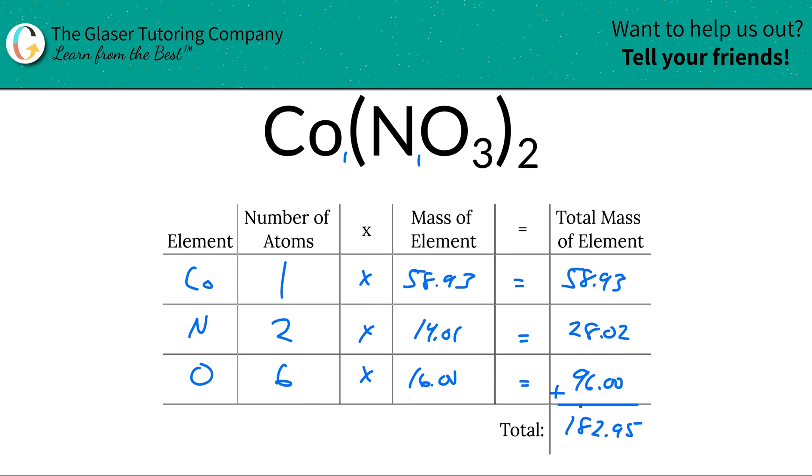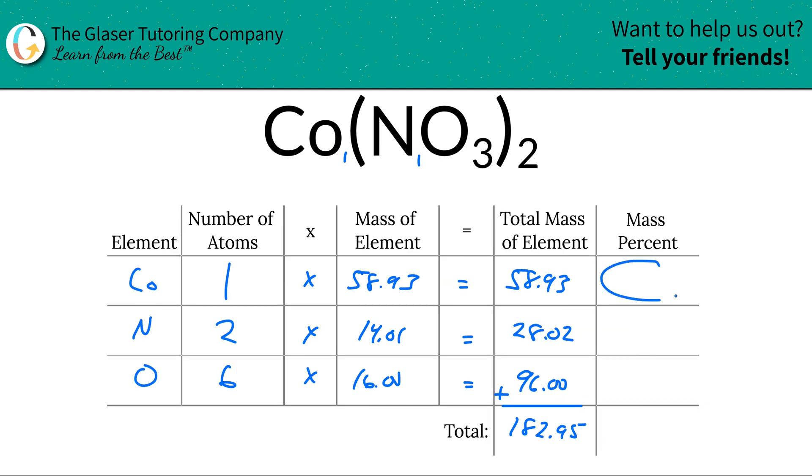Now in order to calculate the percents, it's very simple. This table makes it super easy. To find the mass percent of cobalt, we're simply going to take the total mass of that cobalt we calculated, 58.93, and divide it by the total mass of the entire compound of 182.95, and then multiply it by 100. Simple percent formula, part over whole times 100. The percentage works out to be roughly 32.21%.